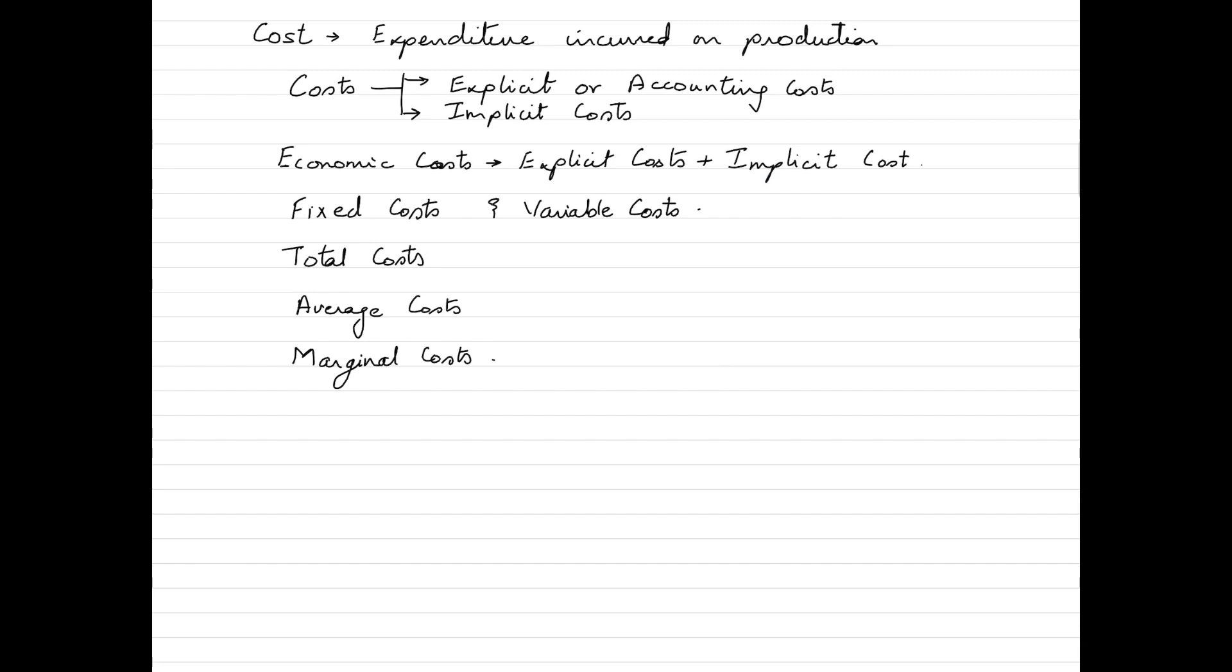Certain examples of variable costs could be raw material, direct labor costs involved for the production, usage of utilities or electricity during the production, fuel usage during the production. All these costs would increase if the production activity is going up.